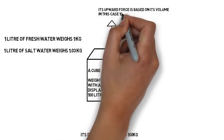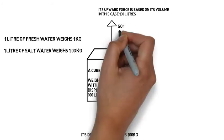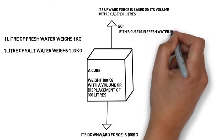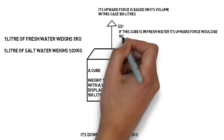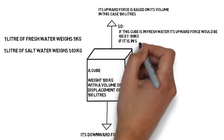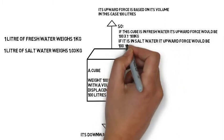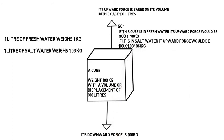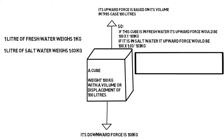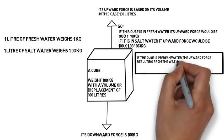The upward force depends on what type of water we are in, because the upward force equals the weight of the water it displaces. If it displaces 100 liters in fresh water, 100 times 1 gives us 100 kilograms upward force. In salt water, one liter weighs 1.03 kilograms, so 100 times 1.03 gives us 103 kilograms upward force.